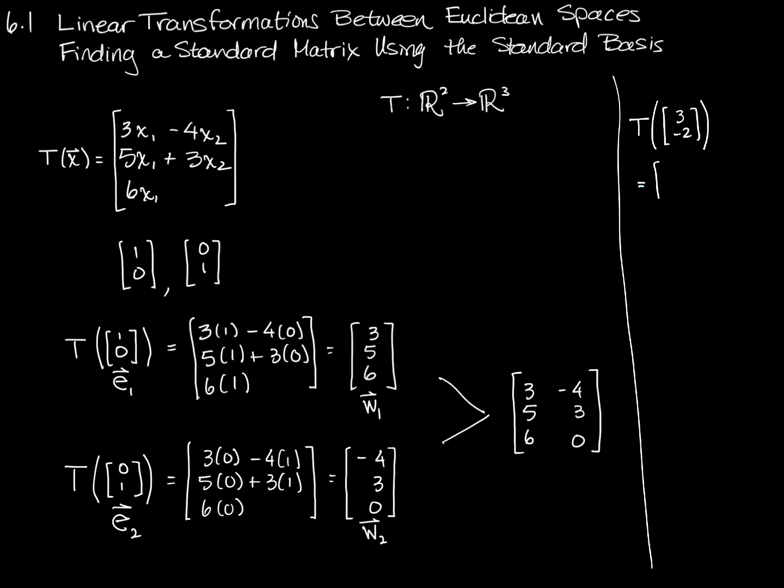It's going to be matrix multiplication of the standard matrix for the transformation times this vector [3, -2], and that is going to be 9 plus 8, 15 minus 6, and 18 plus 0.